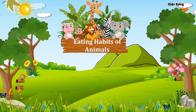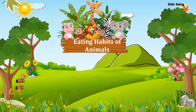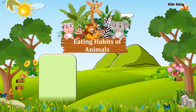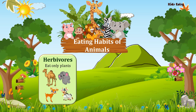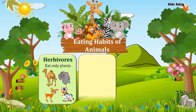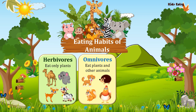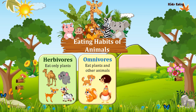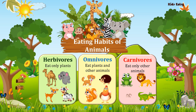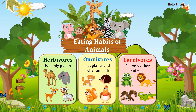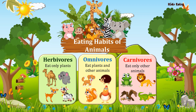Hello Goodies! Welcome to Kids and Free. Different animals eat different kinds of food. Animals that eat only plants are called herbivores. Animals that eat plants and other animals are called omnivores. Animals that eat only other animals are called carnivores. Let's learn about animals and their eating habits. Let's start!